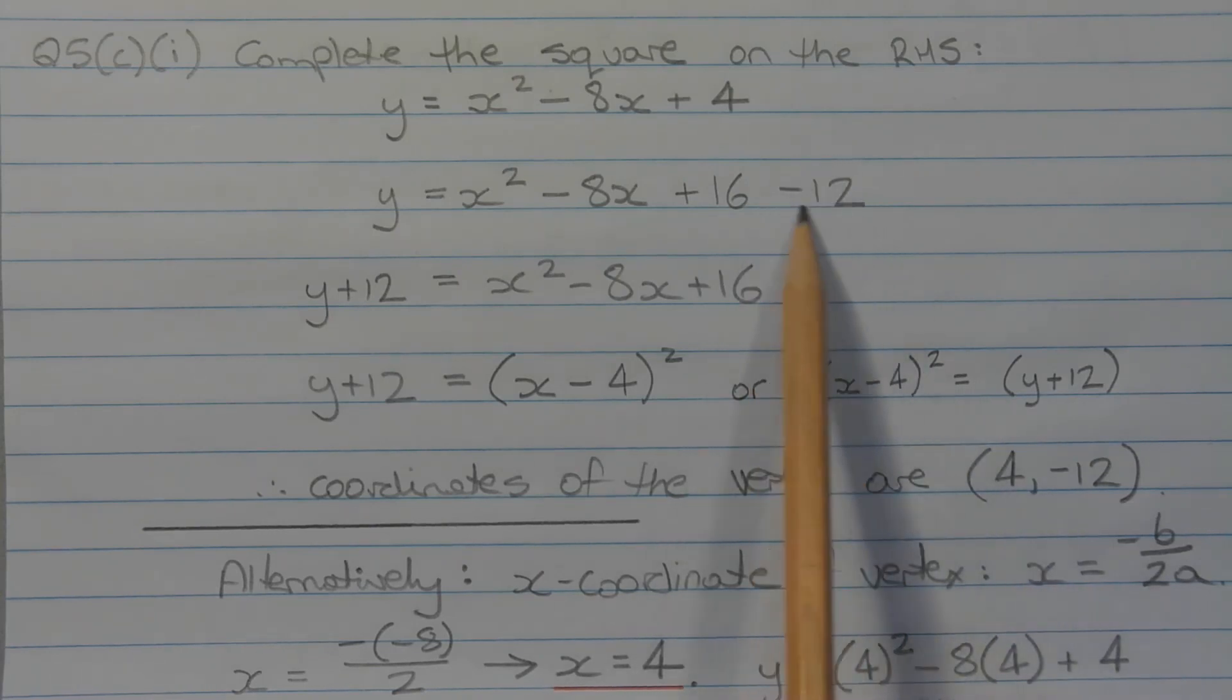The next step is to take this minus 12 and move it over to the other side. So the equation is y plus 12 is equal to x squared minus 8x plus 16. And in doing so, we create a perfect square on the right hand side. Factorizing the right hand side, we get y plus 12 is equal to x minus 4 in brackets squared.